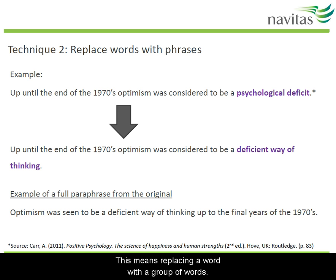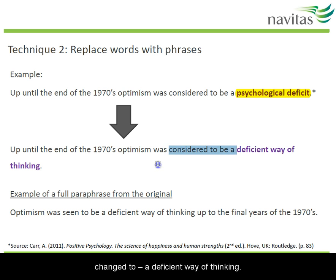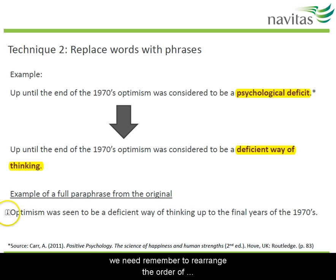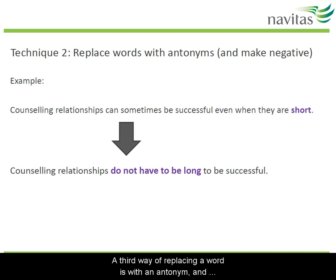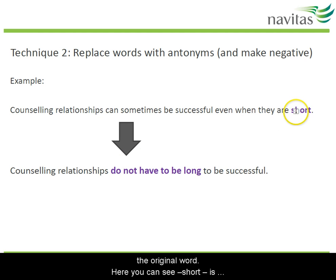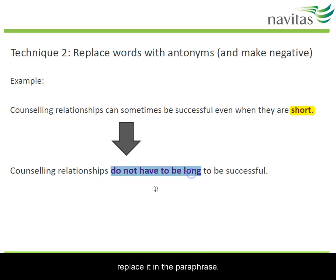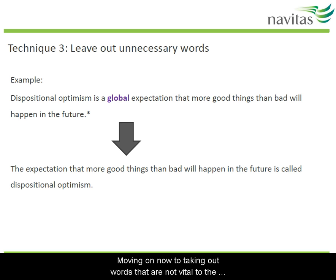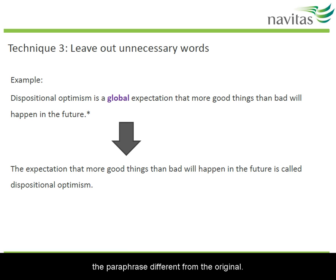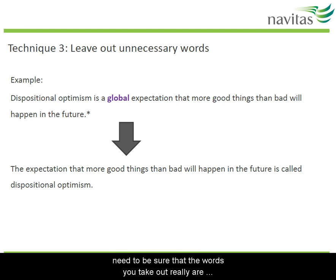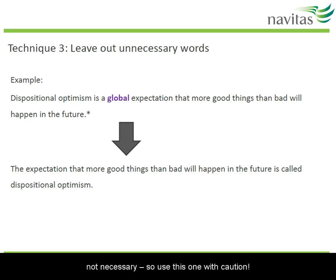Another way to replace words is with phrases — replacing a single word with a group of words. For example, 'psychological deficit' can be changed to 'a deficient way of thinking.' A third method uses antonyms made negative: 'short' can be replaced with 'not long' to give the same meaning. You can also take out words that aren't vital to meaning — for example, removing 'global' can help make the paraphrase different from the original. Use this technique with caution though, as you need to be sure the words you remove really aren't necessary.